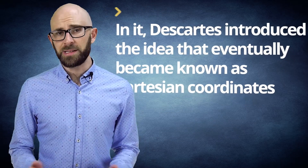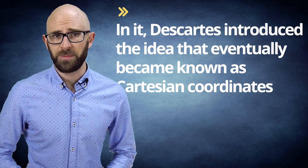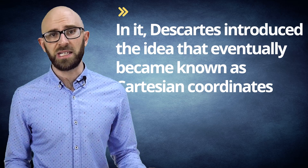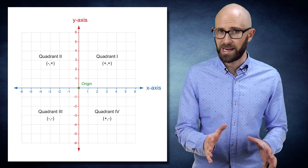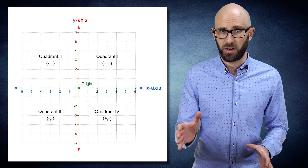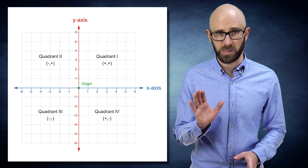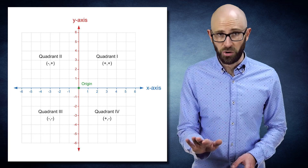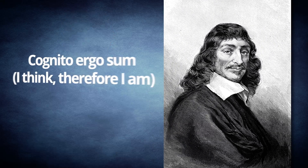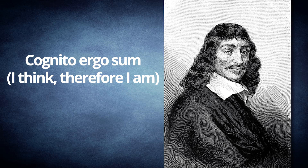La Géométrie was a groundbreaking work. In it, Descartes introduced the idea that eventually became known as Cartesian coordinates, including two perpendicular lines called axes, naming the horizontal one x and the vertical axis y, and designating the point of intersection as the origin. Descartes is also credited with one of the most famous lines in all of Western thought: 'cogito ergo sum' — I think therefore I am.